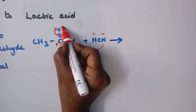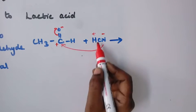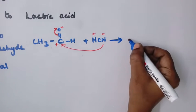This pi bond is shifted to oxygen, oxygen gets negative charge, and the positive and negative they join and the product is formed.